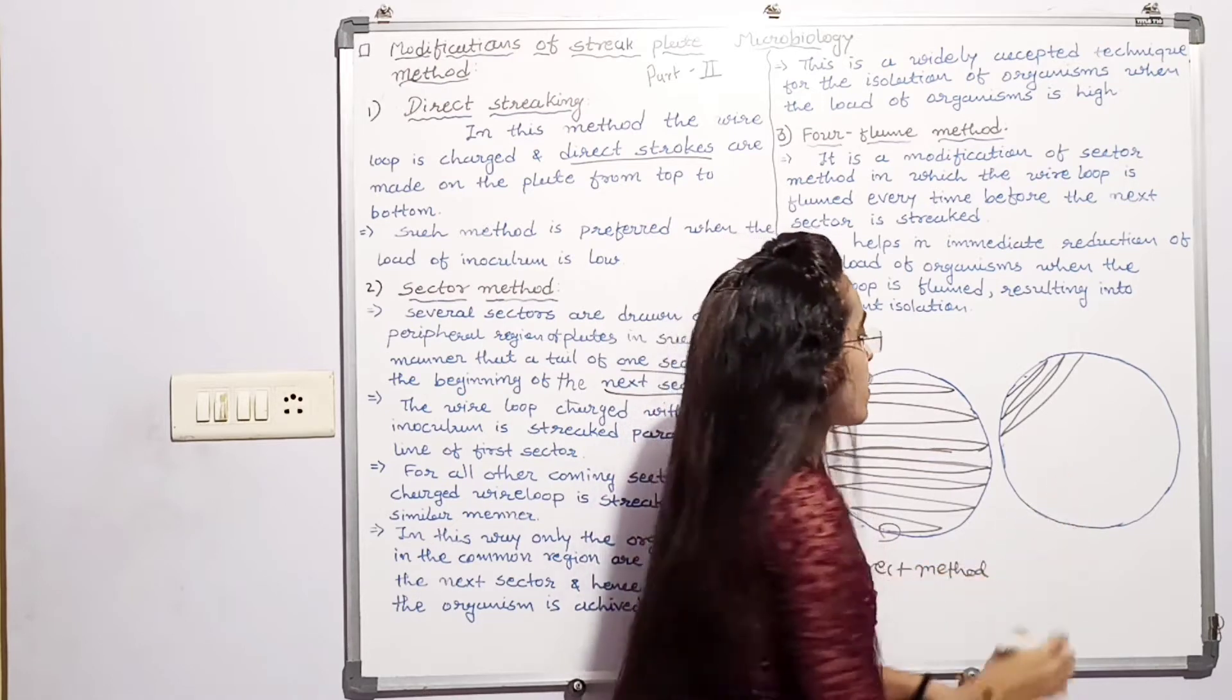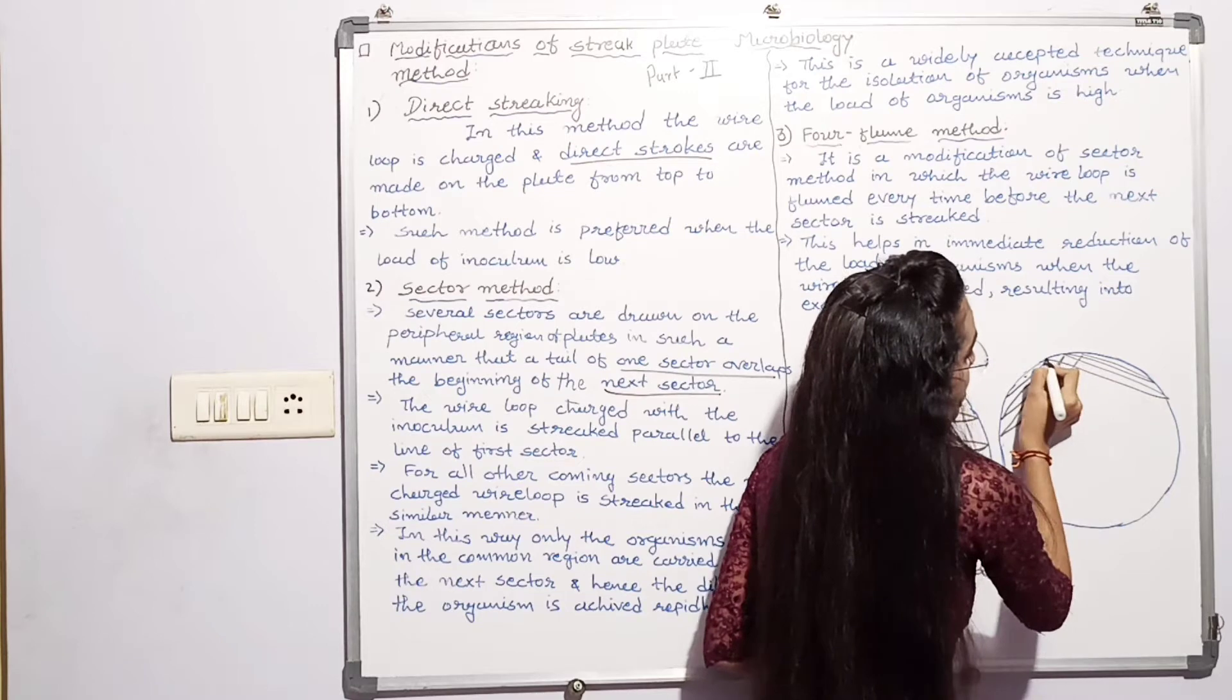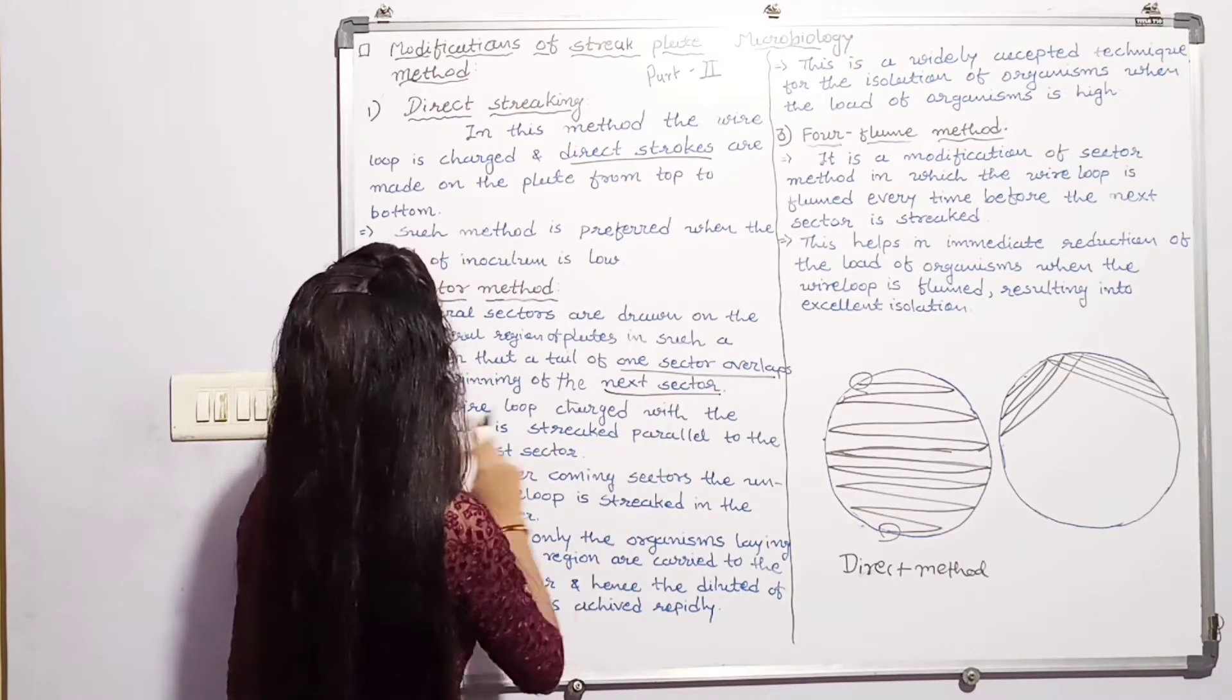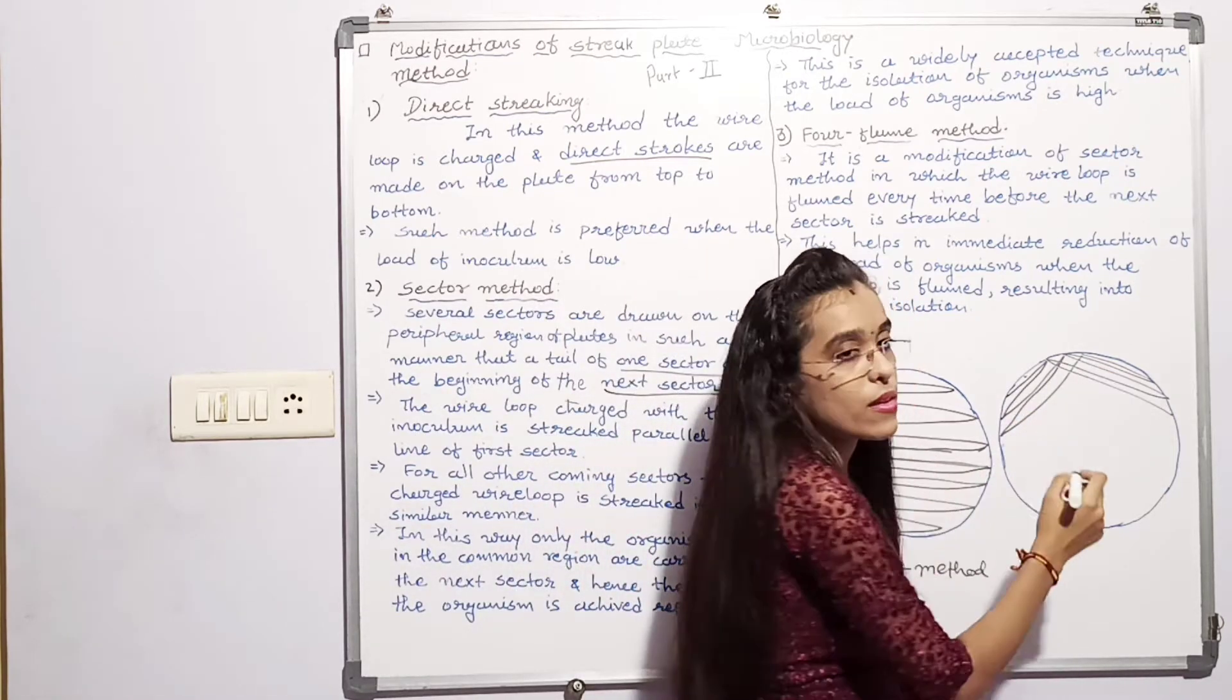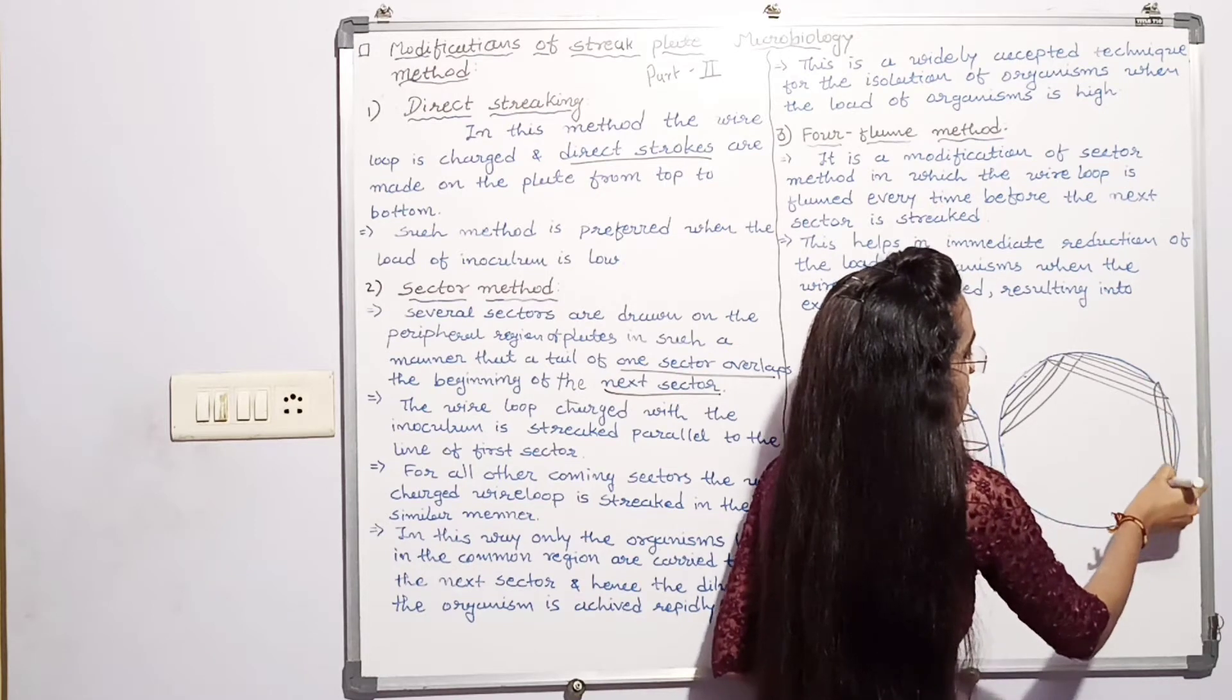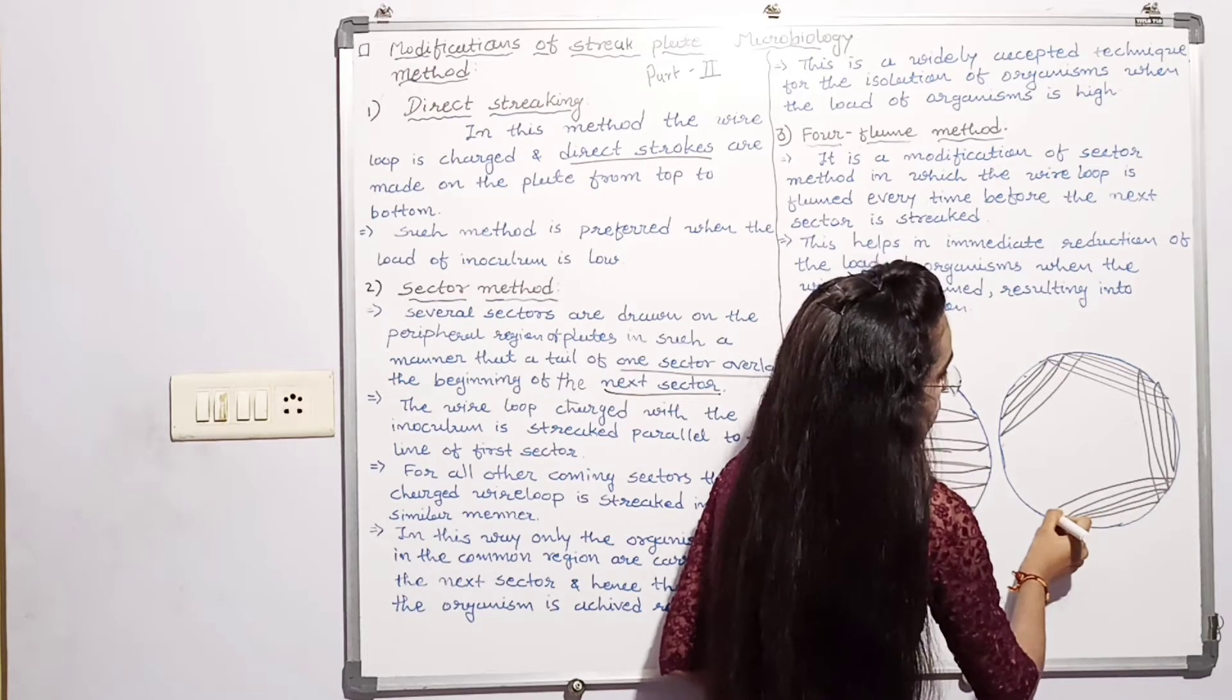We can see that here start from one sector at the end, start this sector at this edge of one sector do overlap another sector. The wire loop is charged with the inoculum, streak parallel to the line of first sector. At the end of the sector start another sector.